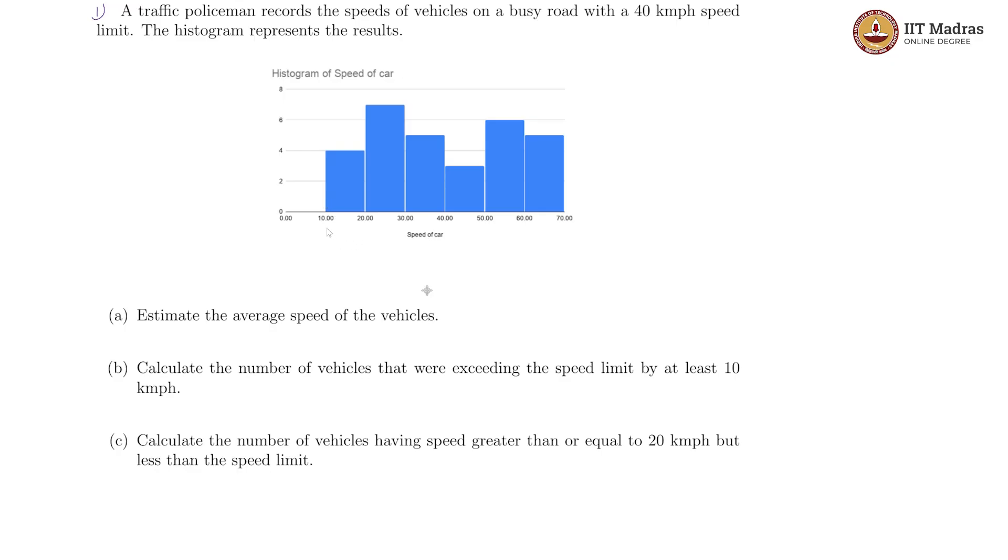We have 10 to 20, so there are 4 vehicles which went from 10. We are looking at greater than or equal to 10, but lesser than 20. The left side is what we take as the included boundary.